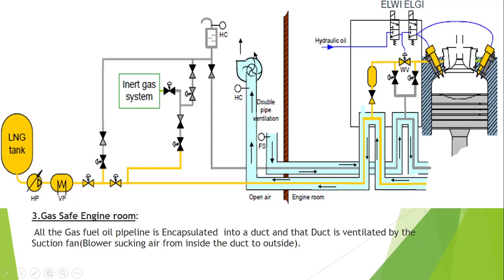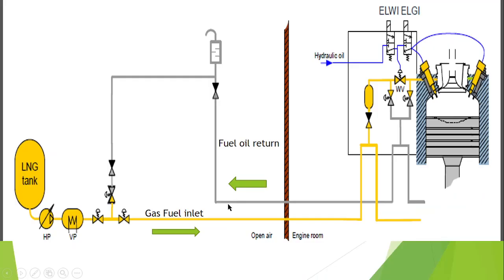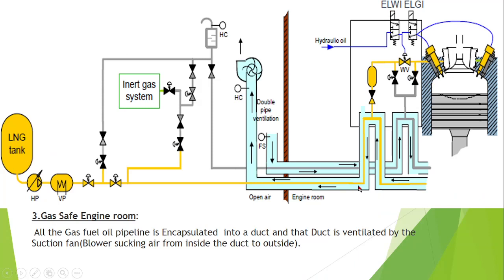Along with the double seating, a blower is provided at one end of the duct. Gas flows through the inner pipeline and air flows from the outward direction. If there is a leakage of gas, it will leak into the duct and the blower will suck it outward. Just before going outside, a hydrocarbon sensor is provided. This hydrocarbon sensor is connected to the alarm system — if it reaches greater than 60% of LEL, it will give an alarm and the system will be completely stopped.